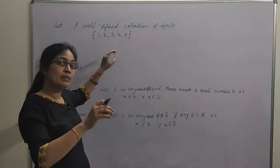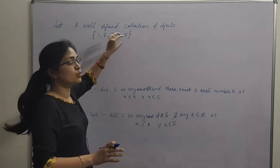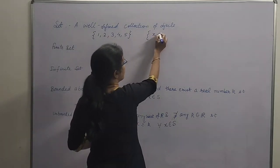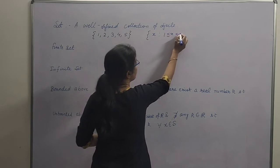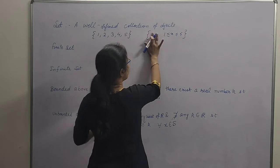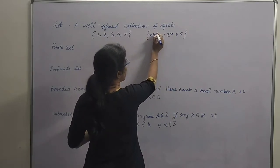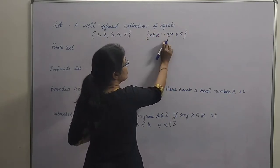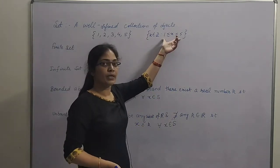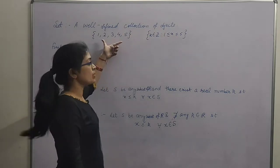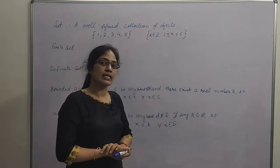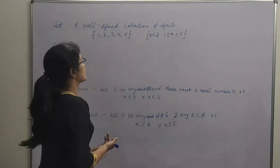Humne kaha, is mein ye elements properly define ho hai — 1, 2, 3, 4, 5. Ya hum kis tarah se likh dete hain? Woh sare elements x such that x lies between 1 to 5. Is mein ek aur condition — isi set ko is tarah se bhi likh sakte ho: woh sare integers which lie between 1 to 5, including 1 and 5. So it is a well-defined, properly defined set. So what is a set? Set is a well-defined collection of objects.